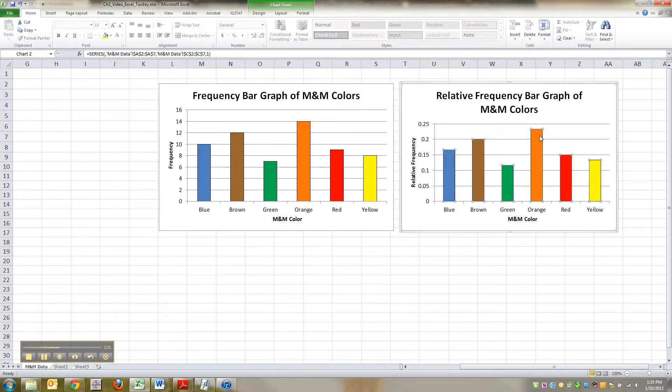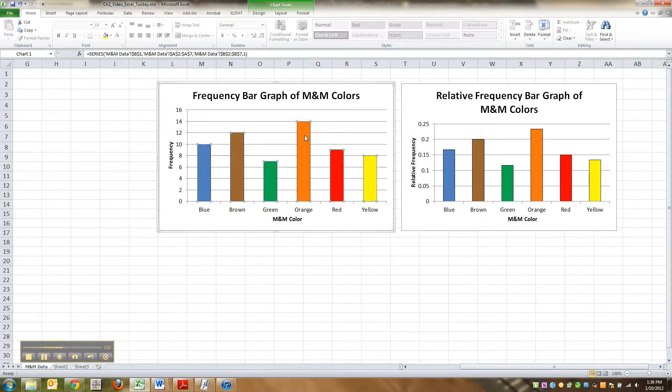So there were literally 14 orange M&Ms in this bag. Down over here, it's not the same. It's not 14, it's what percentage of the bag was orange. So it looks like 23%. So 23% of that bag was orange, whereas only 14 of them were orange, right?